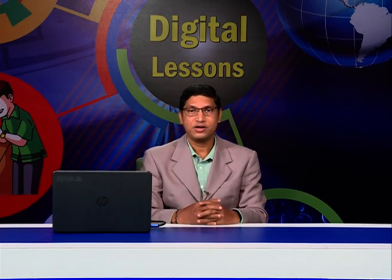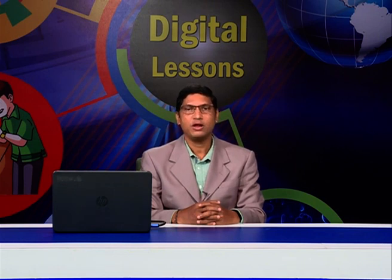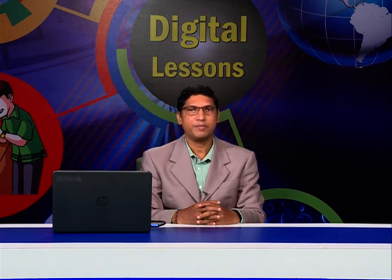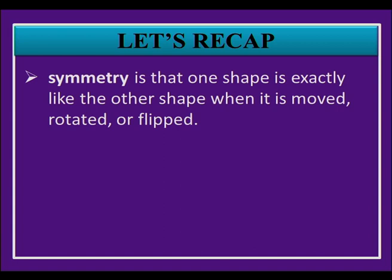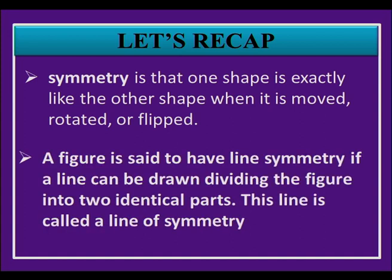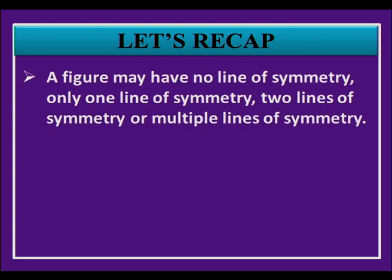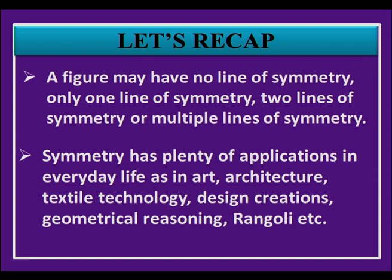Let us quickly recap what we have learnt. Symmetry means one shape is exactly like the other when it is moved, rotated, or flipped. A figure has line symmetry if a line can be drawn dividing it into two identical parts — this line is called the line of symmetry or axis of symmetry. A figure may have no line of symmetry, one line of symmetry, two lines of symmetry, or multiple lines of symmetry. Symmetry has applications in art, architecture, textile industry, design creation, geometrical reasoning, and rangoli.